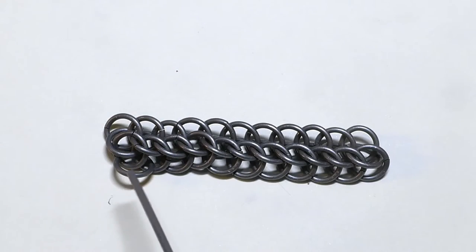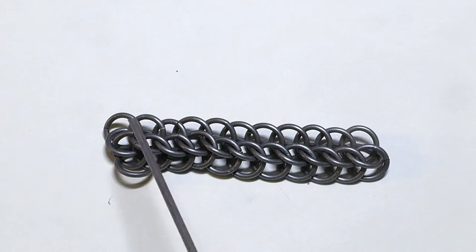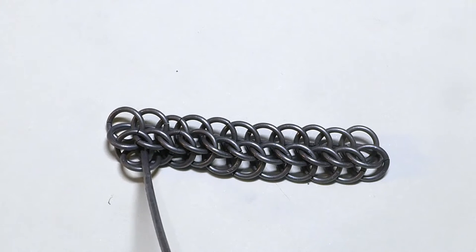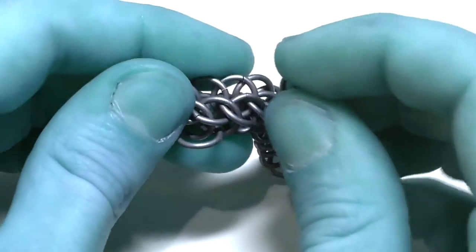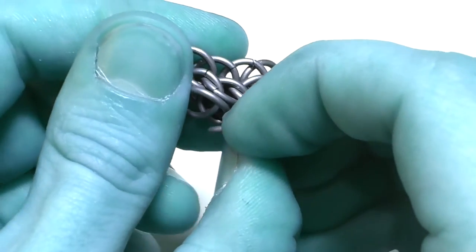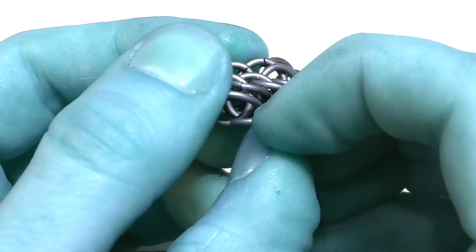Let's close the ring. The next ring will go through this, this and this ring. And it will go in the eye between this and this ring. Here. Here.